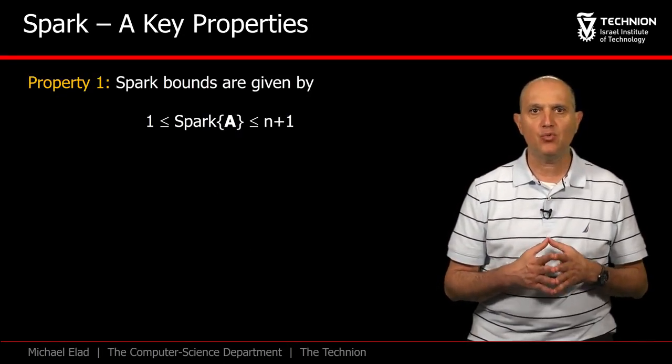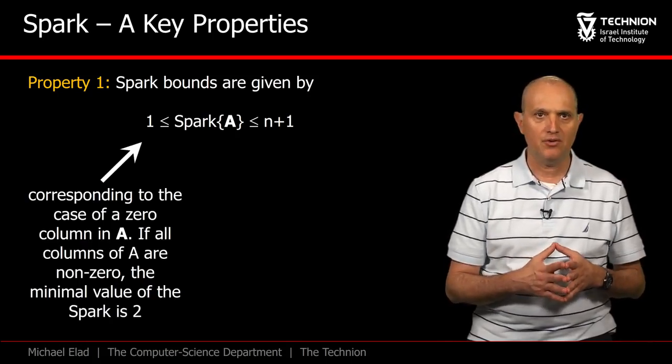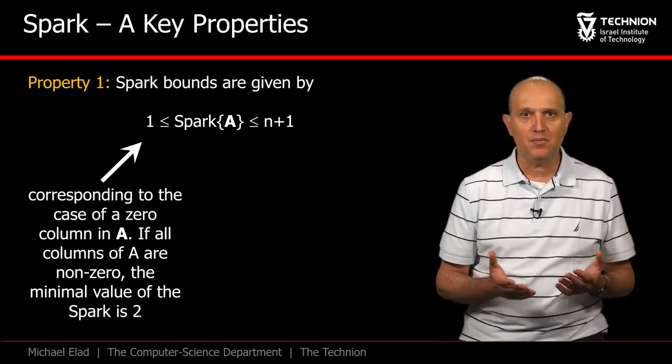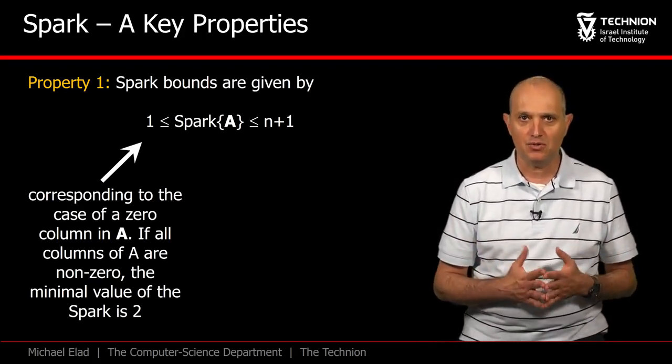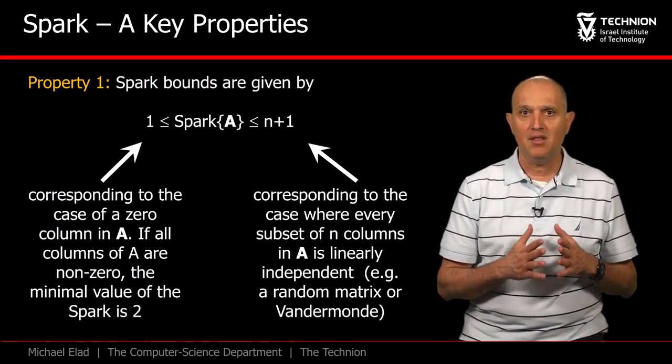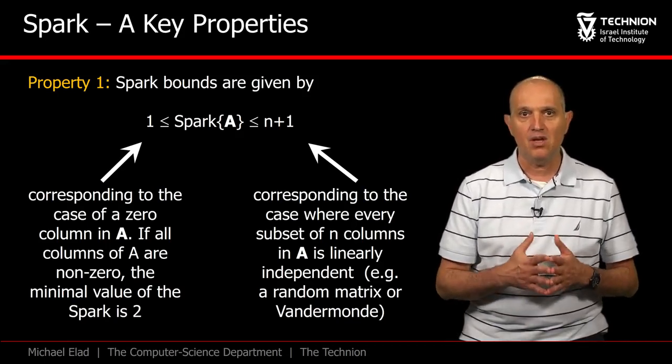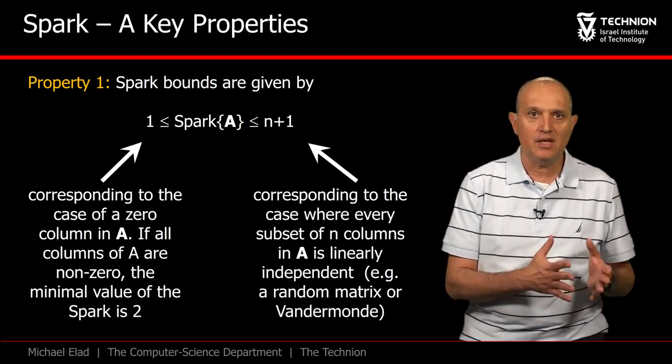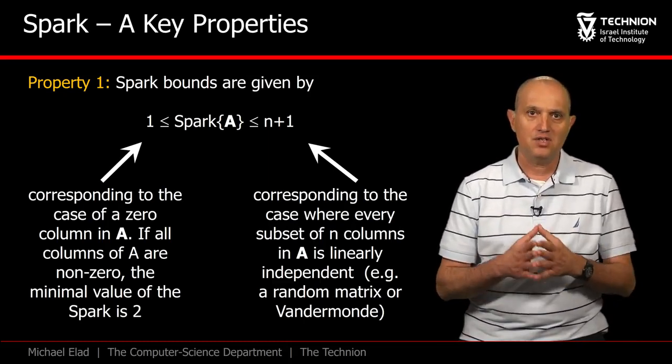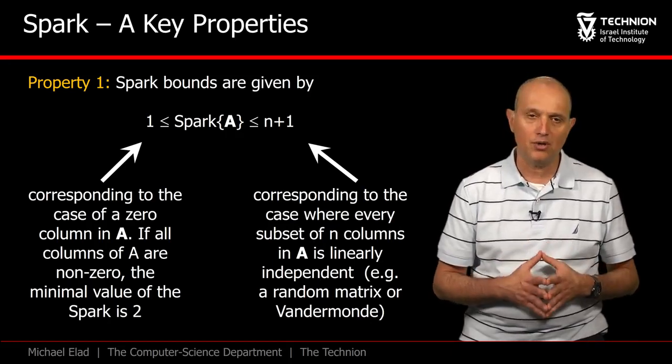The very first property defines the range of values the spark can obtain. The minimal possible spark is 1, referring to the possibility of getting a single zero column in A. If such columns are not permitted, the minimal possible value becomes 2. The maximal spark value is n plus 1, implying that in the matrix A, every subset of n columns is linearly independent. If, for example, A is created by drawing its entries at random from a Gaussian distribution, the spark is maximal. The same goes for Vandermonde matrices that are encountered in polynomial fitting problems.